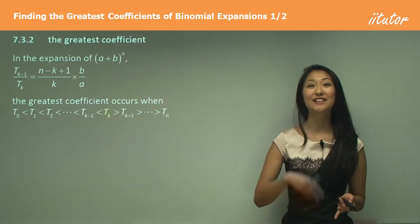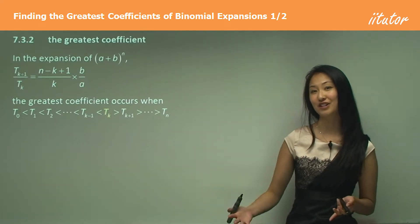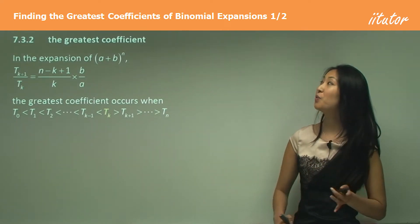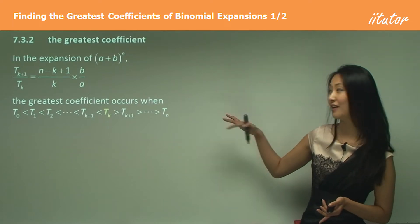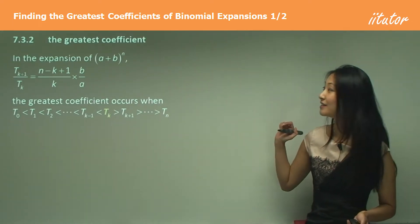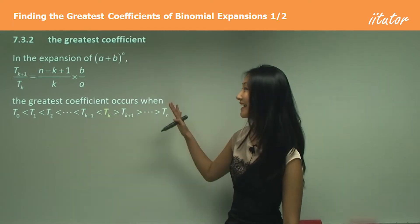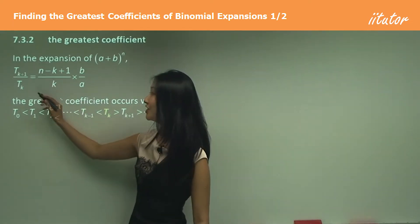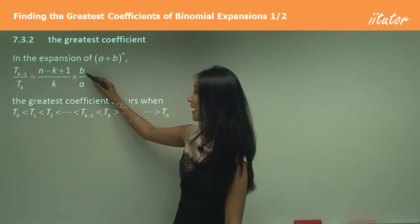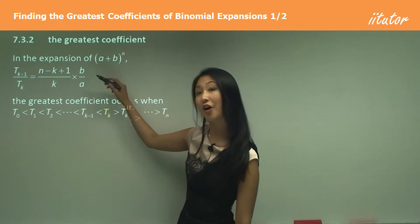We just learned how to find the ratio of the coefficients. Now we're going to use that ratio to work out the greatest coefficient. Remember how we went through that working to find that the ratio equals n minus k plus 1 on k, times b on a.